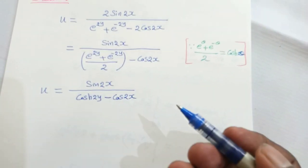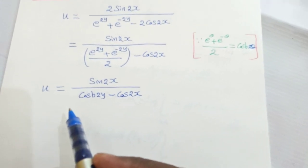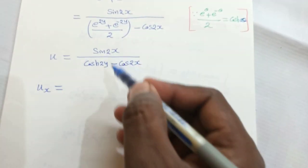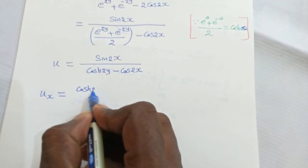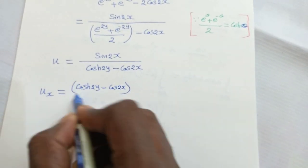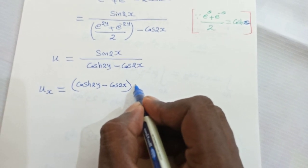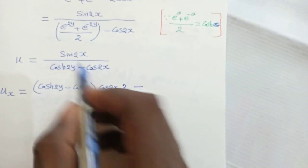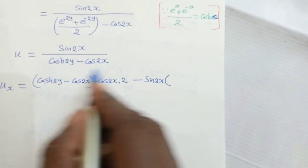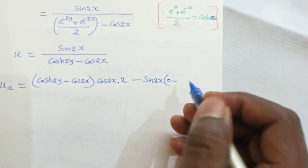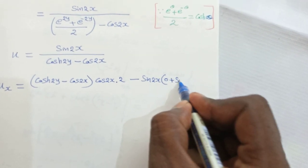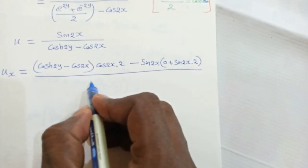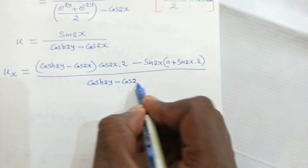For the Milne-Thompson method, we differentiate u partially with respect to x and with respect to y. Differentiating with respect to x using the quotient rule: ux = [v · d(sin2x) - u · dv/dx] / v² = [(cosh2y - cos2x)(2cos2x) - sin2x(2sin2x)] / (cosh2y - cos2x)².